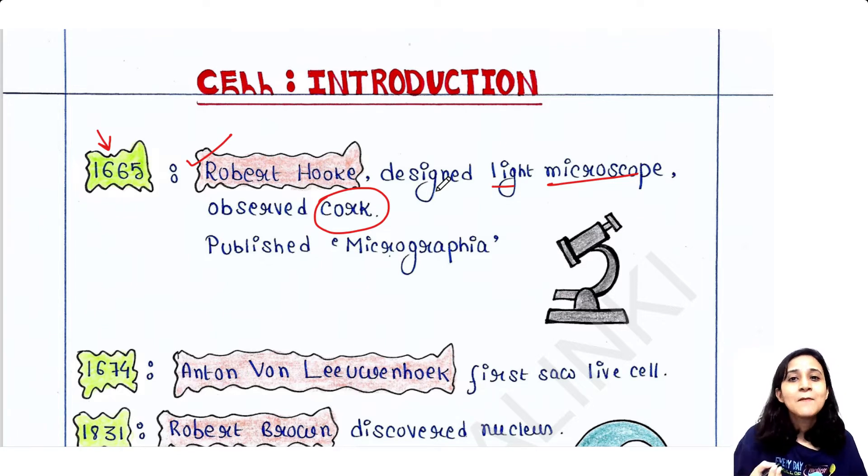Then he observed that cork under microscope and he found the cell exists. So he first time found the cell from the cork, but it was dead because the cork is dead tissue.